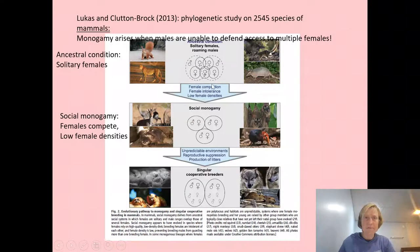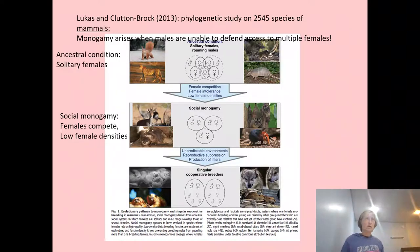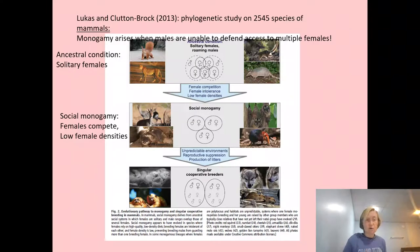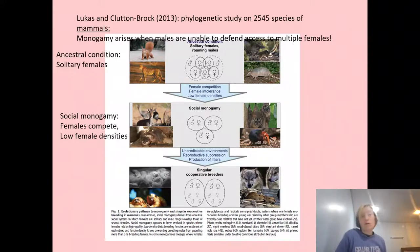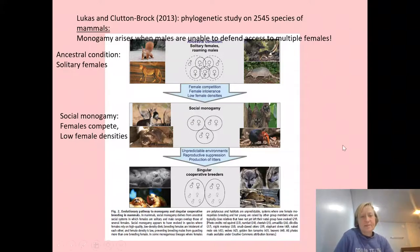What could lead to social monogamy under this framework is females competing with each other or being spread out due to thin resources, so males can no longer defend a harem and can only guard one female. They did not find that infanticide played a big role. In unpredictable environments, this could even lead to cooperative breeding.